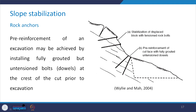This figure shows two sets of anchors. The first is the stabilization of a displaced block with tensioned rock bolts. The second is pre-reinforcement of the cut face with fully grouted un-tensioned dowels. The pre-reinforcement of an excavation may be achieved by installing fully grouted but un-tensioned bolts or dowels at the crest of the cut prior to the excavation.